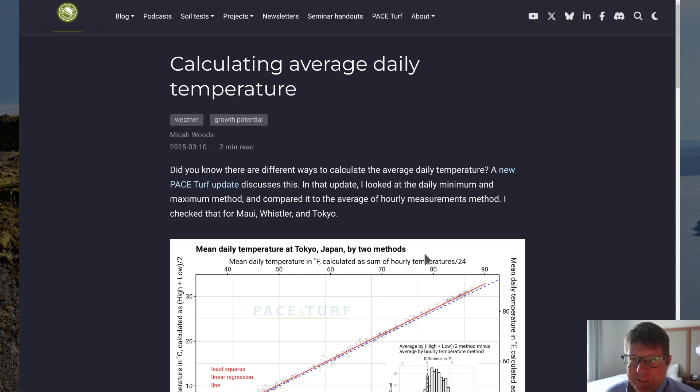In this episode, we're going to take a look at something that you might think is very simple. Maybe you haven't thought about this before, and that is how you calculate the average daily temperature. A lot of people will be doing this to calculate things like growing degree days or to look at growth potential because the growth potential for turf grass is calculated based on the average daily temperature.